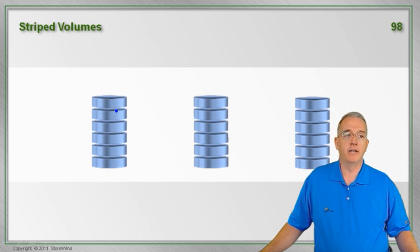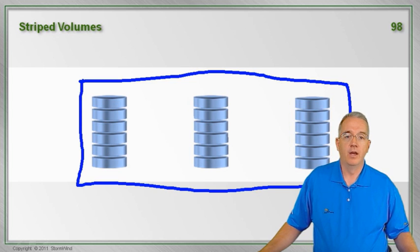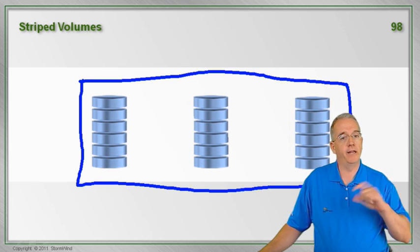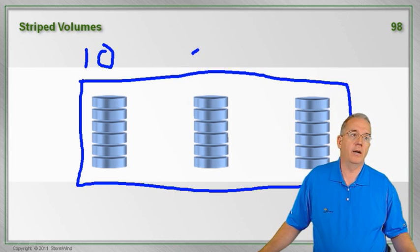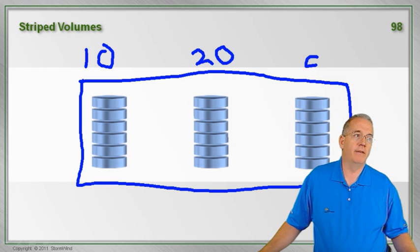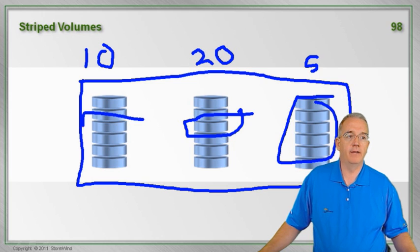Something else to realize is that a stripe set, the pieces have to be about the same size. Now you don't have to go through and take all the entire available blank space. So for example, let's say that I have 10 gig available here, I have 20 gig available here, and I have 5 gig available here. What I can do is I can take all 5 gig from this drive, and then 5 gig from here, and then 5 gig from here.